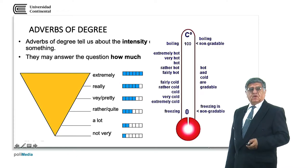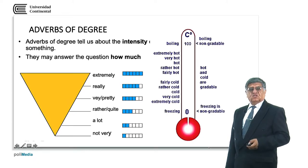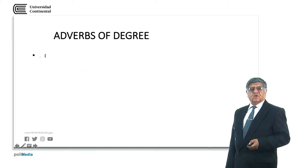For example: not very easy, a lot difficult, rather expensive, very beautiful, really difficult, and extremely hot. These all show the intensity of the adjective they modify.